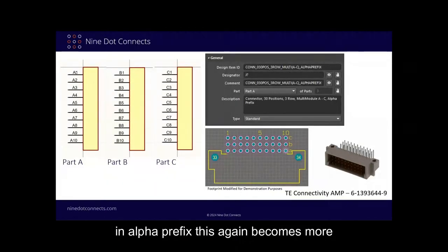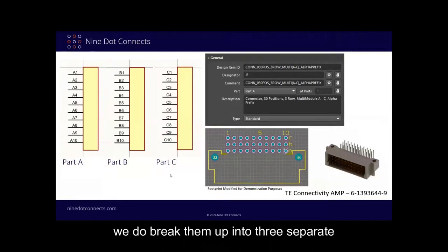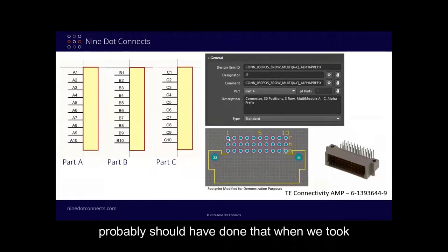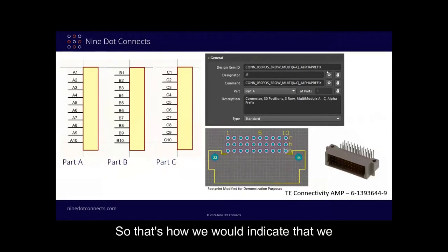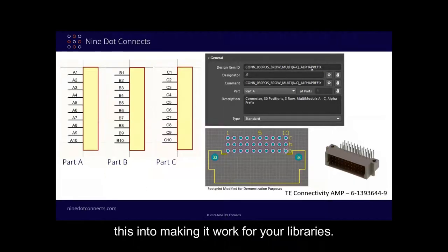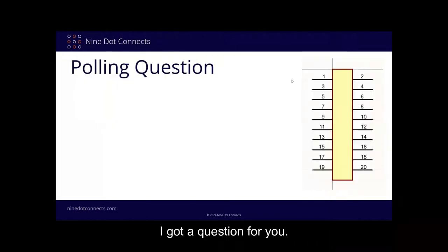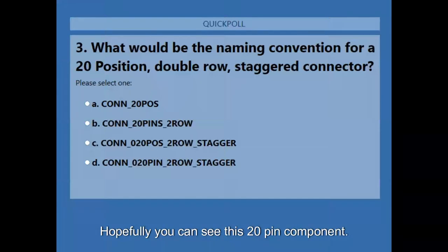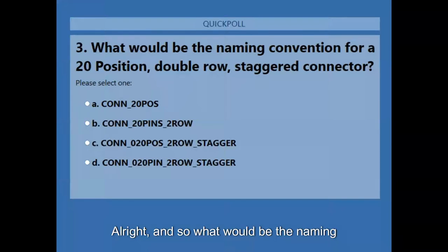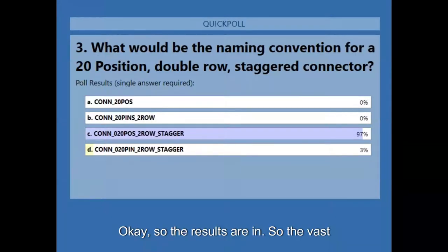Here's an example of not only MULTI but an alpha prefix, which becomes more common with larger components. For a 30-pin, three-row connector broken into three separate parts, we indicate there's an alpha prefix — pins would be labeled A1, A2, A3, etc., because there's a pin-pad correlation between them. That's how we indicate an alpha prefix. Now a polling question: given a 20-pin component shown on screen, what would be the naming convention for a 20-position double-row staggered connector? The vast majority of you got it correct: CONN_20POS_2ROW_STAGGER.